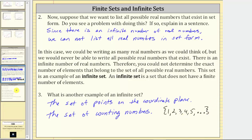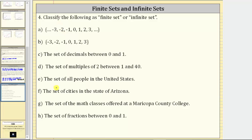Now for the next exercise, we will determine whether the following sets are finite or infinite. For A, notice how we have dot, dot, dot, then negative three, negative two, and so on, and to the far right we have three, then dot, dot, dot. This means the list continues indefinitely to the right and to the left, in both the positive and negative direction. Because we cannot determine the exact number of elements in this set, this is an example of an infinite set — and this is the set of integers.